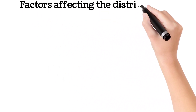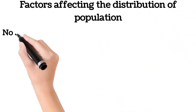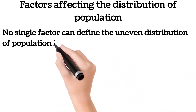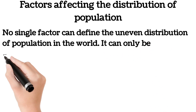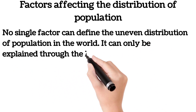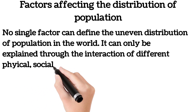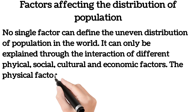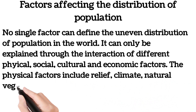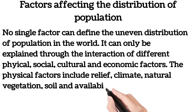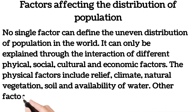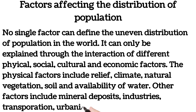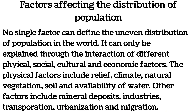Factors affecting the distribution of population: no single factor can define the uneven distribution of population in the world. It can only be explained through the interaction of different physical, social, cultural, and economic factors. Physical factors include relief, climate, natural vegetation, soil, and availability of water. Other factors include mineral deposits, industries, transportation, urbanization, and migration.